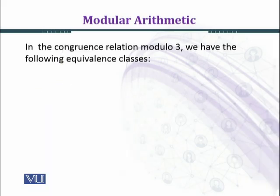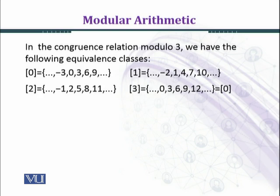In the congruence relation modulo 3, we have the following equivalence classes. When we divide an integer by 3, we have 3 possibilities of remainder. Either we shall get 0, 1 or 2. In the 0 class, you can see that we have multiples of 3. Because when we divided multiples of 3 by 3, we shall get remainder equal to 0.